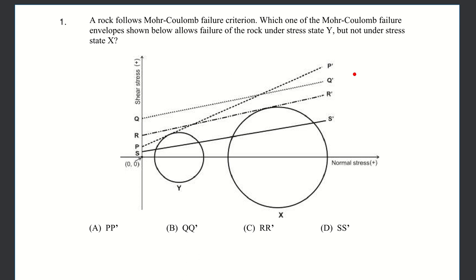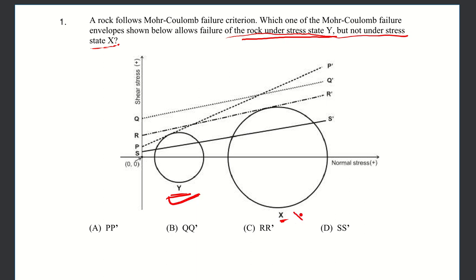Let's start with the first problem. This is on our Mohr-Coulomb failure criteria. What they have done is given us four different envelopes, and what they're asking is which out of these four is a failure criteria for stress state Y — this circle over here — but not stress state X, which is this one. So in other words, which out of these envelopes applies to Y; that is, which out of these four lines is tangent to this circle but not this one. Let's look at the first one.